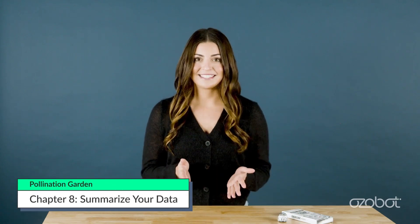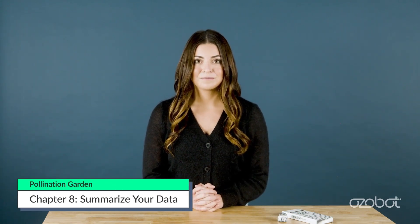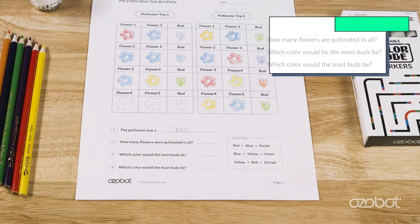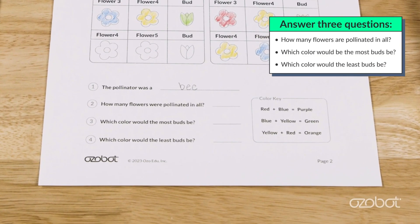Finally, use your math skills to answer questions that summarize your data. Use the trip one and trip two data charts to answer three questions: How many flowers are pollinated in all? Which color would the most buds be? Which color would the fewest buds be?